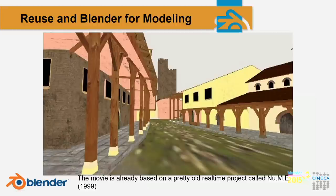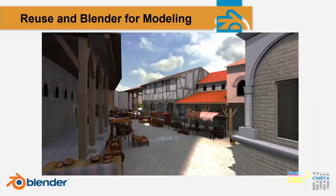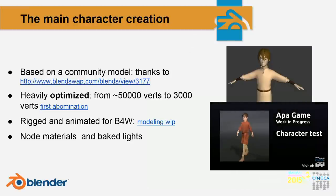There are other projects from the past. This one is called Nume, which is a real-time navigation into Bologna, and these are some of the models we re-elaborated to make that movie. This is an ancient version, and this is the actual look of part of the game prototype — you can see the new assets and new texturing.